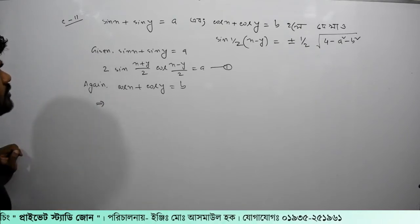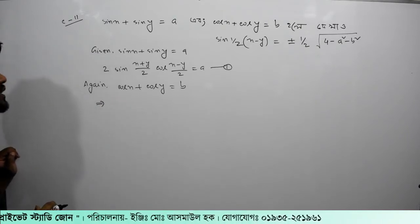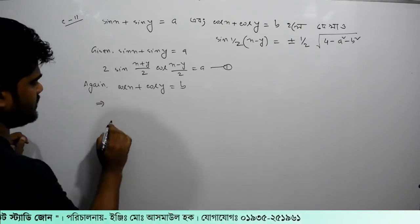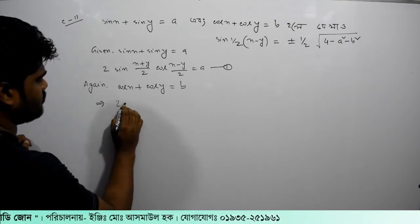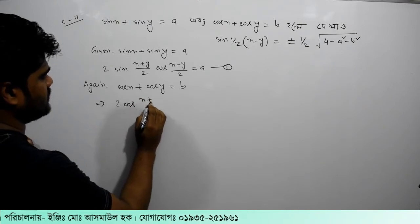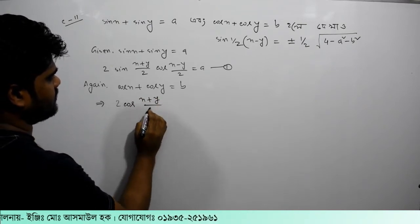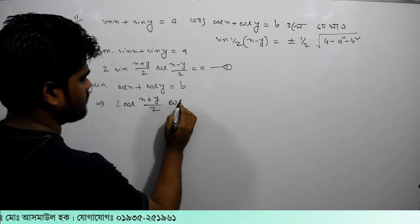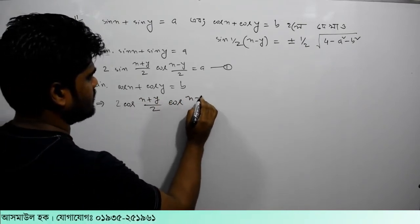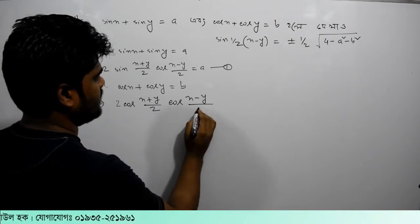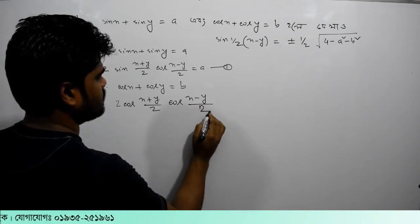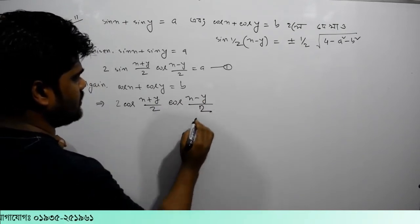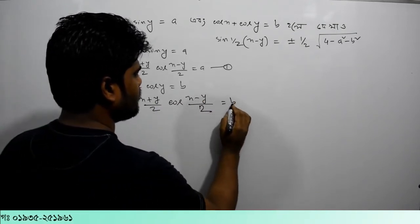(c+d)/2 · cos((c-d)/2) · cos((c+d)/2), and cos((c-d)/2) equal to b.